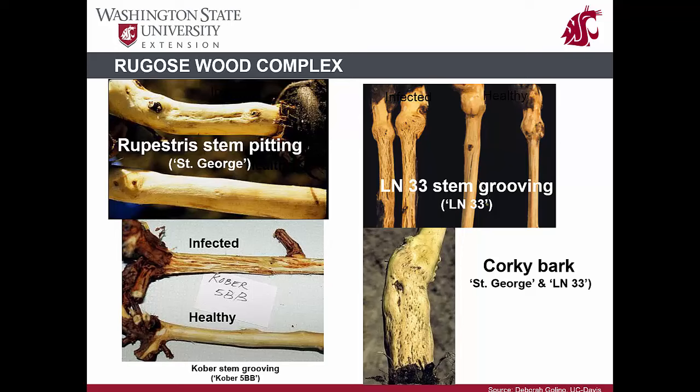For example, Rupestris stem pitting disorder induces distinctive stem markings when grafted to the rootstock St. George, consisting of pitting extending downward from the graft union. Similarly, LN33 stem grooving disorder shows grooves of various lengths that develop on the rootstock LN33. Kober stem grooving induces wood necrosis, pits and grooves on the stems, and yellow spots on the leaves of the rootstock Kober 5BB.